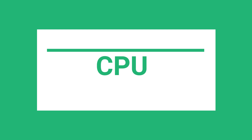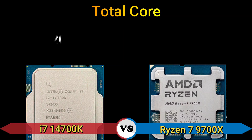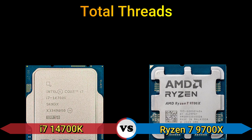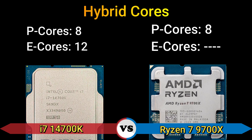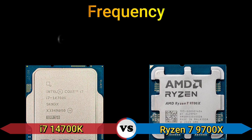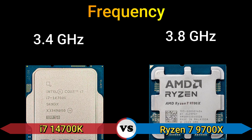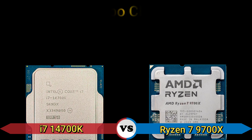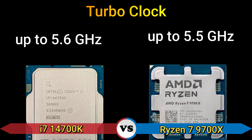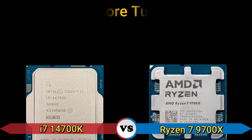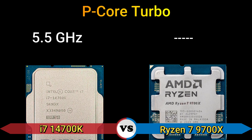Part 2 — CPU cores. Total cores: 20 and 8. Total threads: 28 and 16. Hybrid core: performance cores 8, e-cores 12, and performance cores 8. Base frequency: 3.4 GHz and 3.8 GHz. Turbo clock: up to 5.6 GHz and up to 5.5 GHz. Performance core turbo: 5.5 GHz.